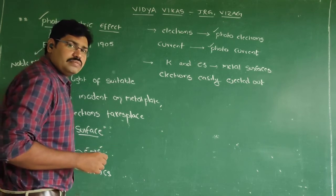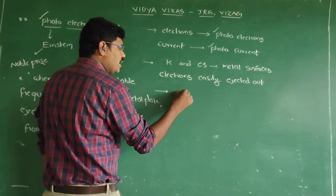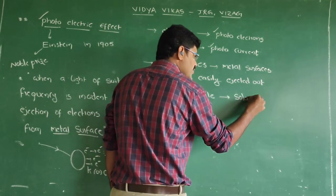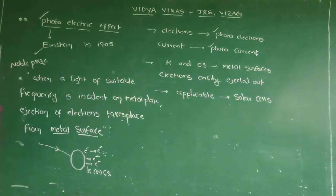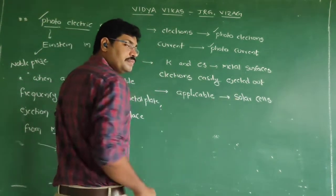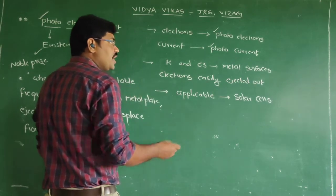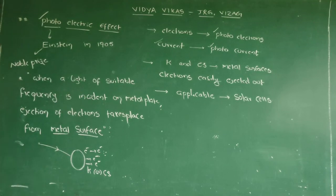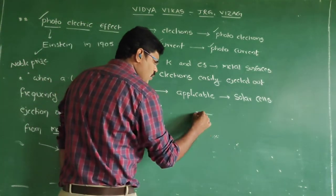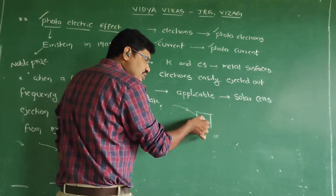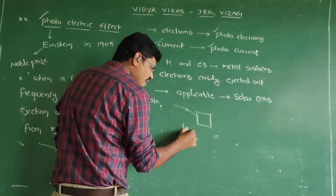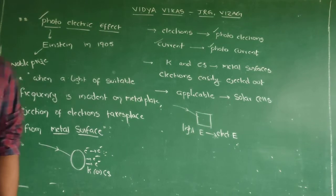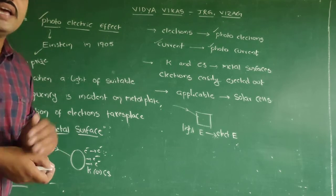Where do we apply photoelectric effect in our daily life? This photoelectric effect is applicable during the working of solar cells. Solar energy is converted into electrical energy. All solar cells work on the principle of photoelectric effect. Because in the solar plate, some light is incident on the solar cell, and it converts that light energy directly into electrical energy. This is basically photoelectric effect.